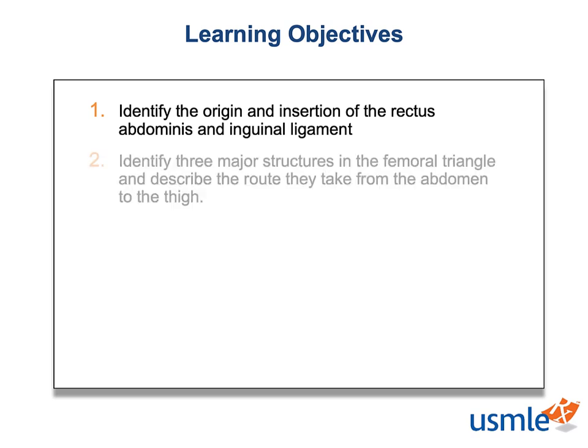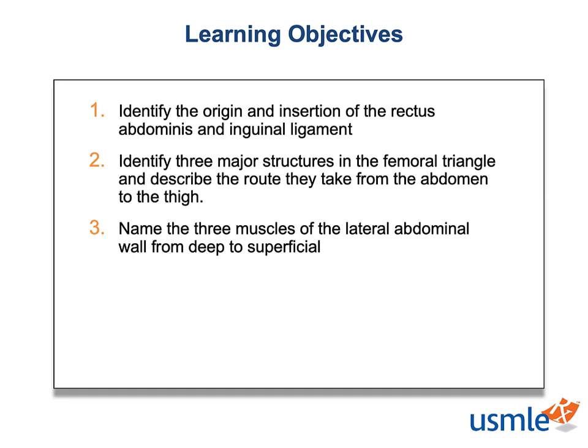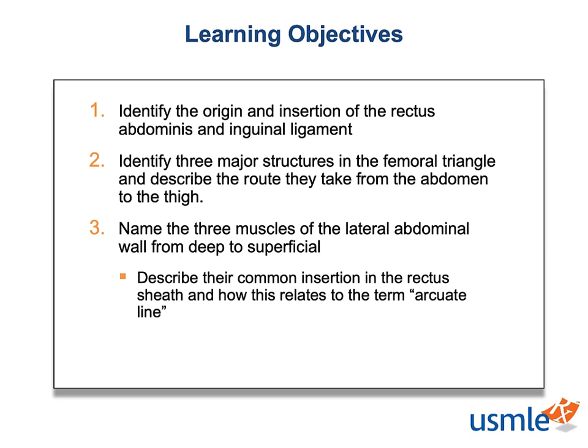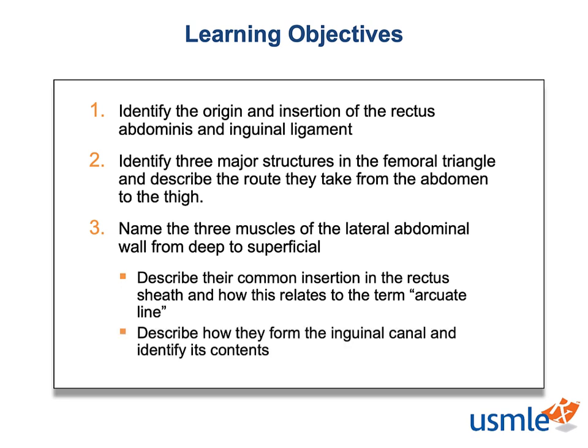2. Identify three major structures in the femoral triangle, and describe the route they take from the abdomen to the thigh. 3. Name three muscles of the lateral abdominal wall from deep to superficial, then describe their common insertion in the rectus sheath and how this relates to the term arcuate line. Finally, describe how the lateral abdominal muscles form the inguinal canal, and identify the contents of said inguinal canal.